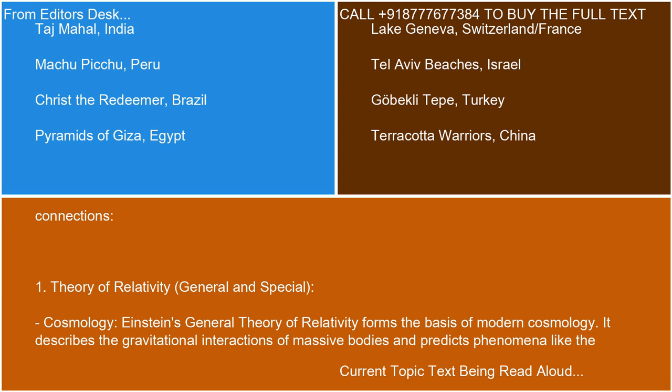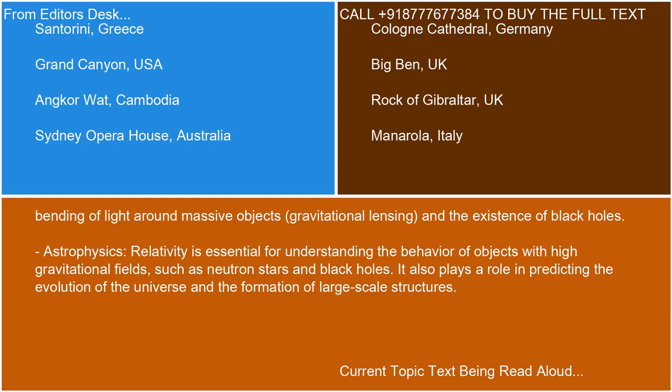1. Theory of Relativity, General and Special — Cosmology: Einstein's general theory of relativity forms the basis of modern cosmology. It describes the gravitational interactions of massive bodies and predicts phenomena like the bending of light around massive objects, gravitational lensing, and the existence of black holes.